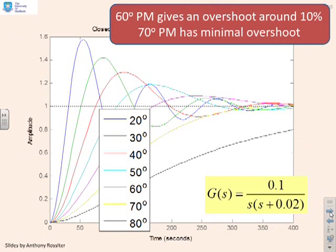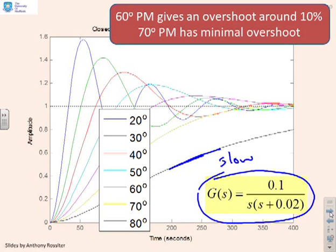Example one: G equals 0.1 over s times s plus 0.2. We've plotted closed-loop step responses for different phase margins by changing the gain. With an 80-degree phase margin, you are slow—too much. With 70 degrees, you're also relatively slow.